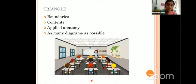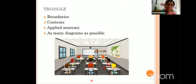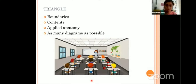Coming to the triangle, we'll see how to write down a question on the triangle. Whenever I'm teaching in a classroom, I ask my students to correlate a classroom to that of a triangle. The classroom has got boundaries — you can name them anterior wall, posterior wall, medial wall and lateral wall. Similarly, your triangle has got boundaries named in a similar fashion. Then the classroom has a roof and floor, very much similar to a triangle. The students and teacher in the classroom are the content of the classroom. Similarly, a triangle also has contents in the form of nerves and vessels. Your answer to the triangle would be incomplete if you do not mention the applied importance.